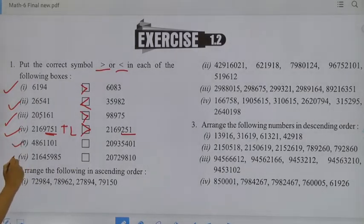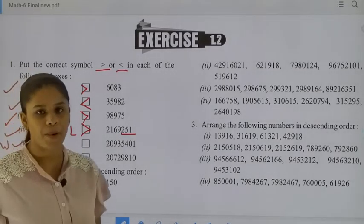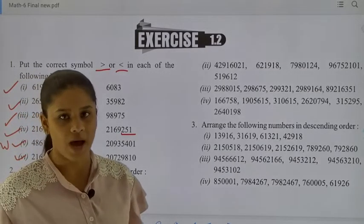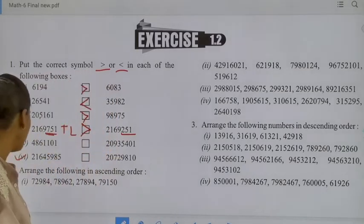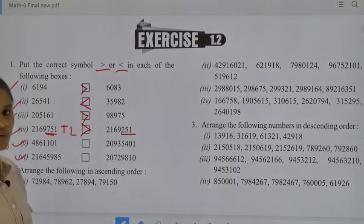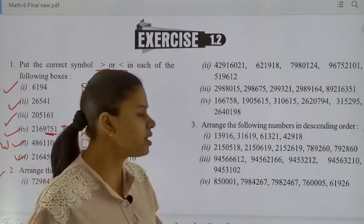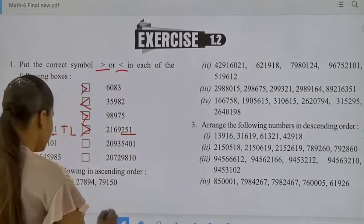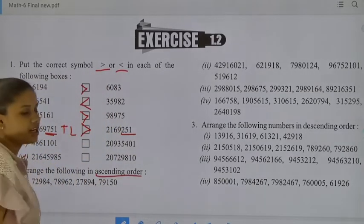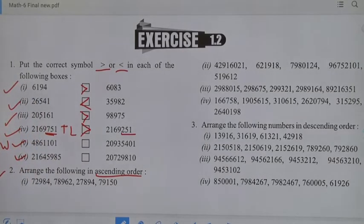Now, the 5th and 6th parts are your homework — you have to do them yourself. You have to do all the parts in your maths notebook. Now move to the next question: arrange the following numbers in ascending order. In this question we have to arrange the numbers in ascending order. Ascending order means smallest to greatest.